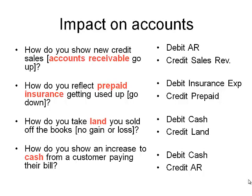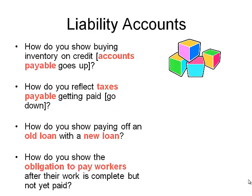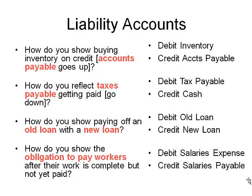Let's try a few more — freeze the frame, write it on your page, then check the answers. If we're buying inventory on credit, inventory goes up — inventory is an asset, so you debit it. You are not paying for it yet, so you won't credit cash. Instead you credit accounts payable, which makes a liability go up because you owe vendors.